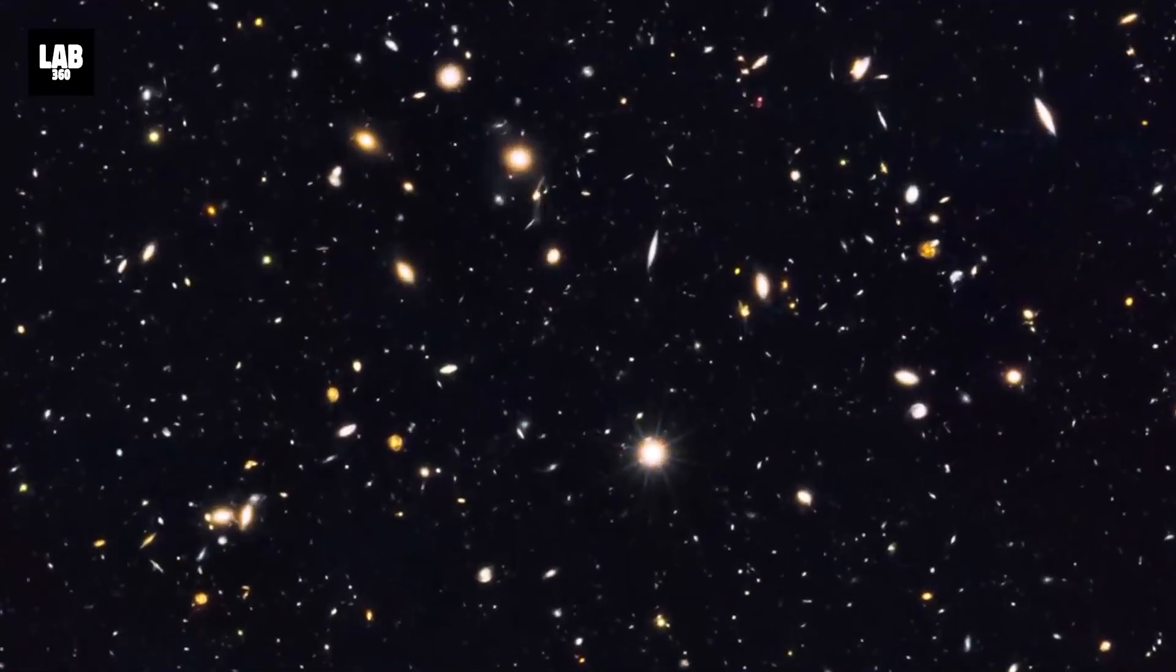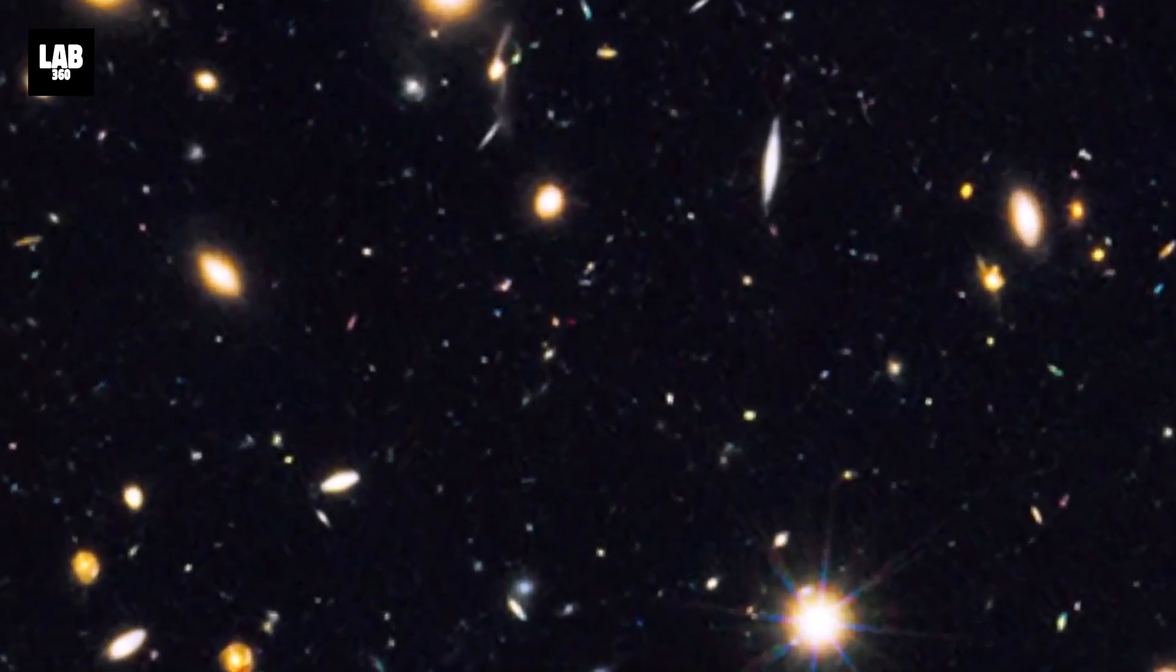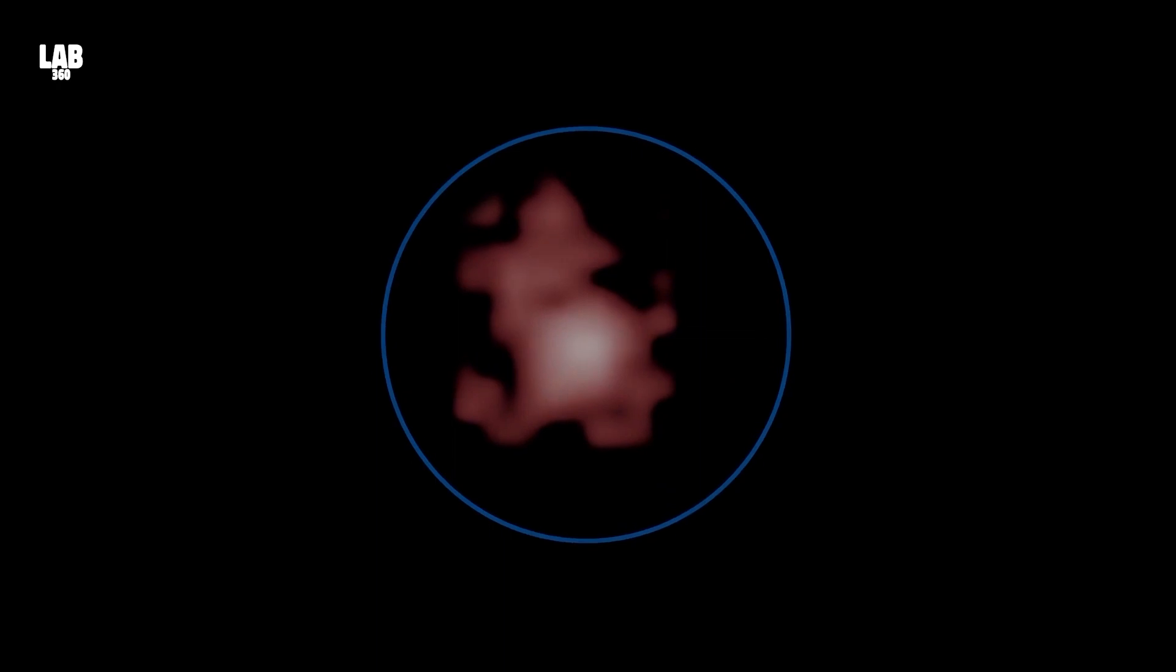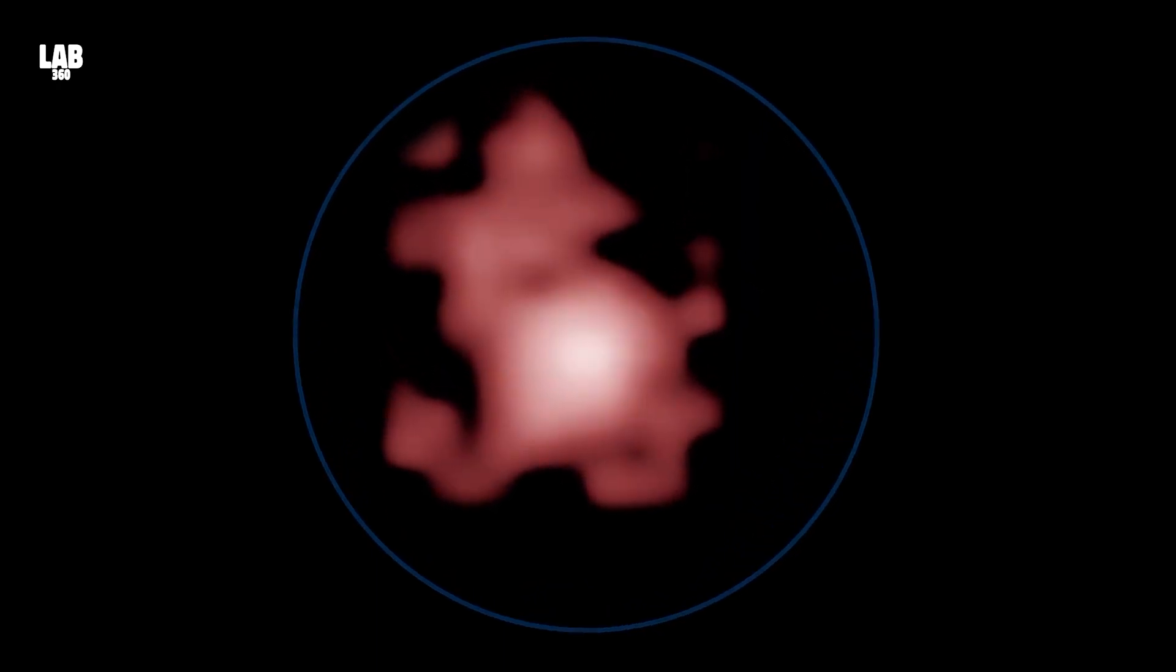Previously, the earliest galaxies we could see just looked like little smudges. And yet those smudges represent millions or even billions of stars at the beginning of the universe, said a NASA scientist.